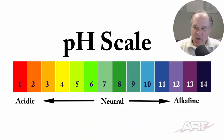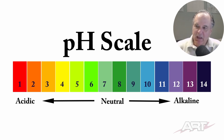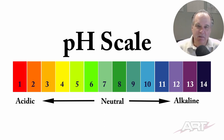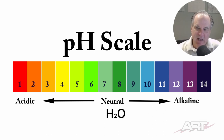pH can be found on a scale of 1 to 14. On the acidic end, something very acidic would likely be strong enough to burn a hole through something. And on the other end of the scale, something extremely alkaline can also burn a hole through something. Water is right in the middle — water would be considered neutral. pH stands for the power of hydrogen, so it's related to water.